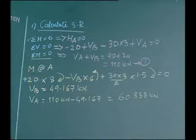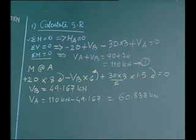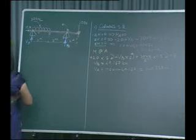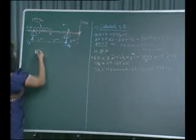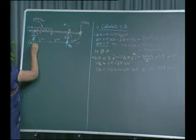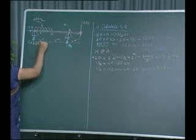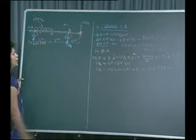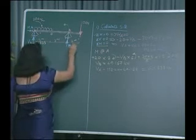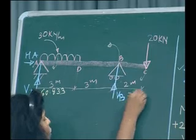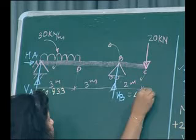Our first step of calculating the support reactions is complete. Both values obtained are positive, so VA equals 60.833 kilonewtons and VB equals 49.167 kilonewtons.